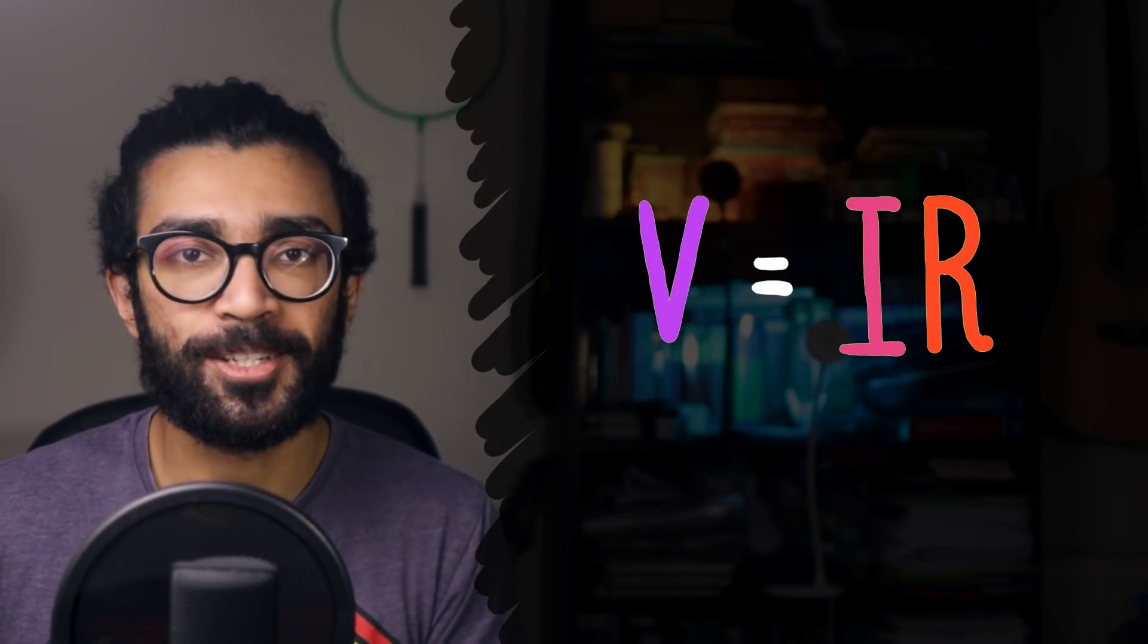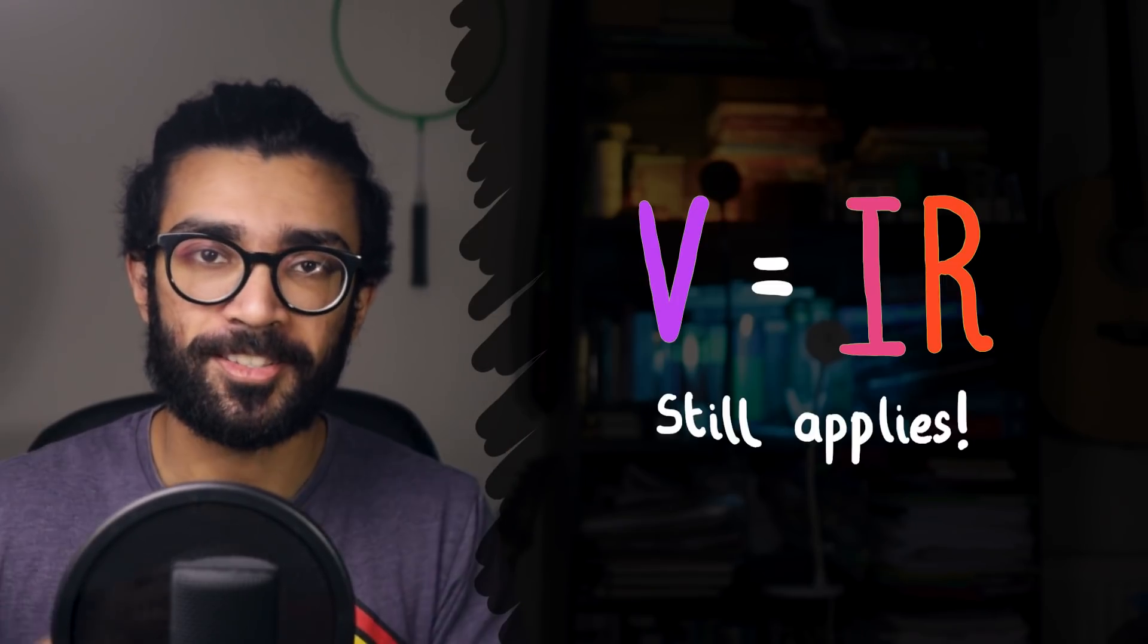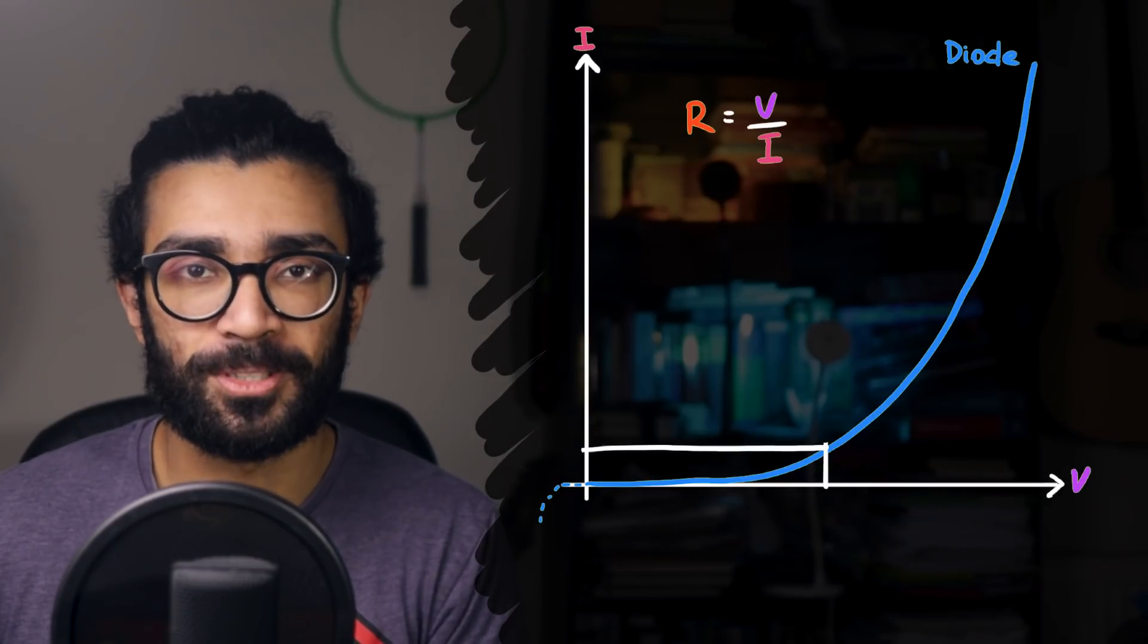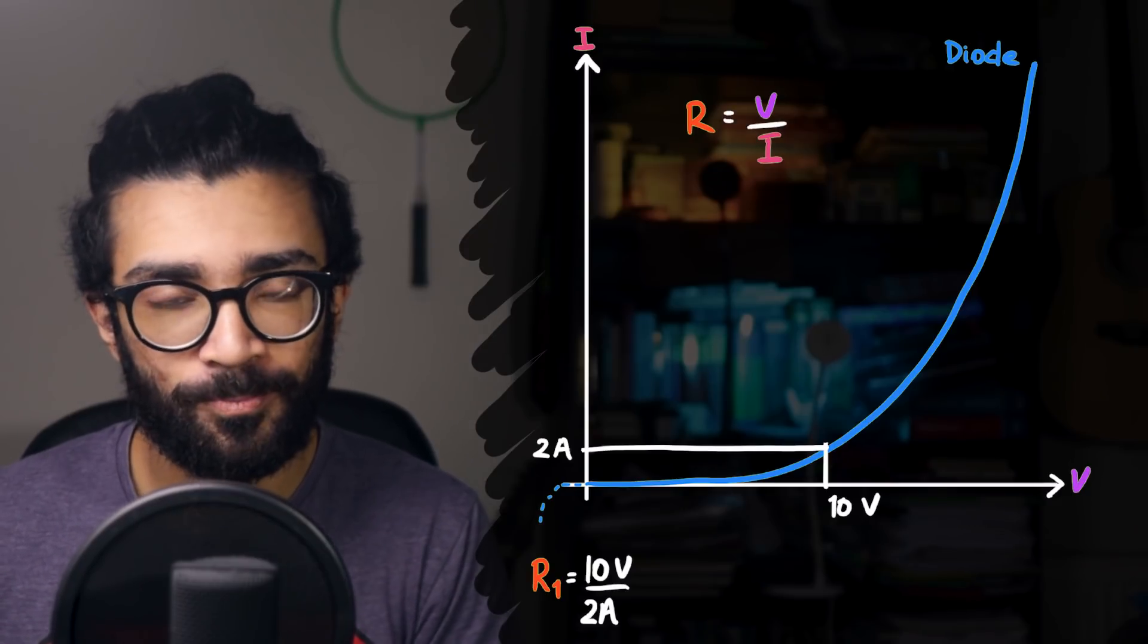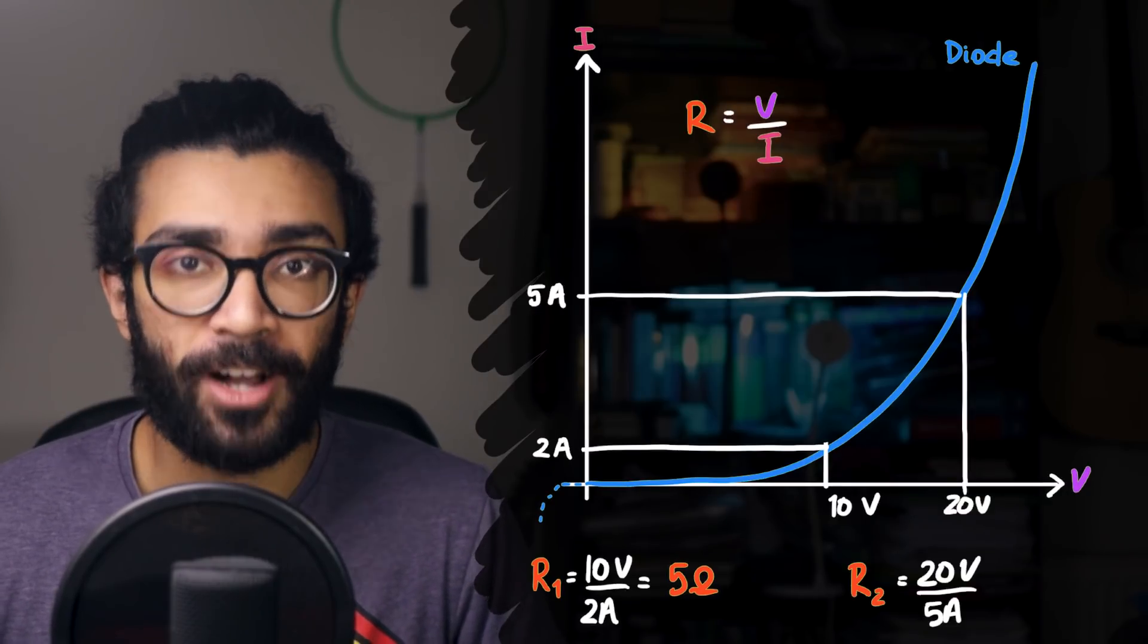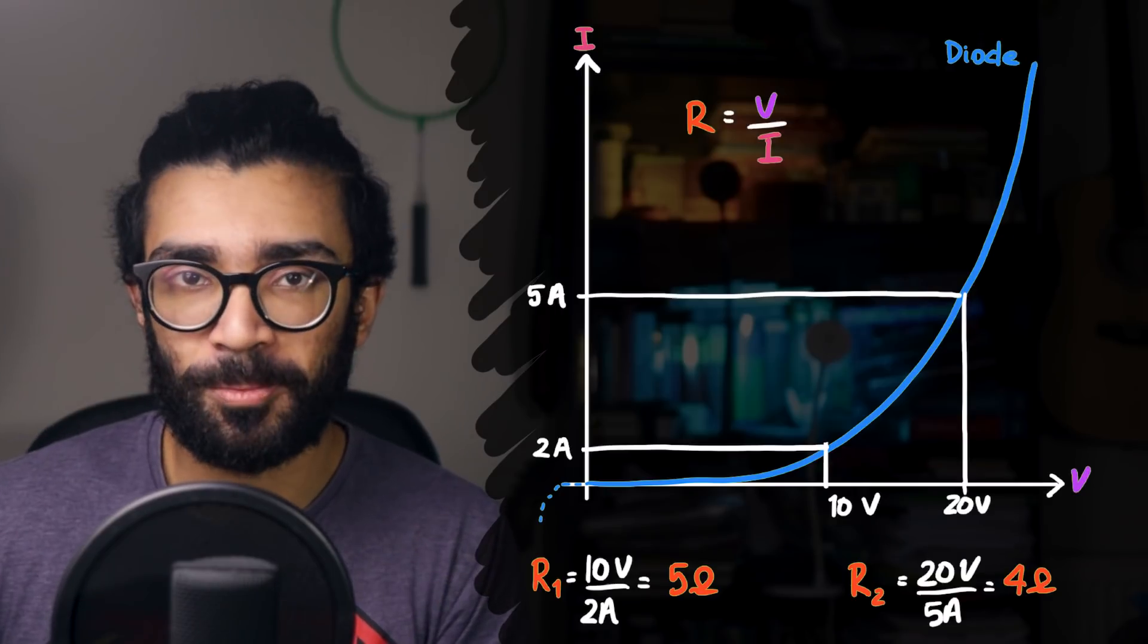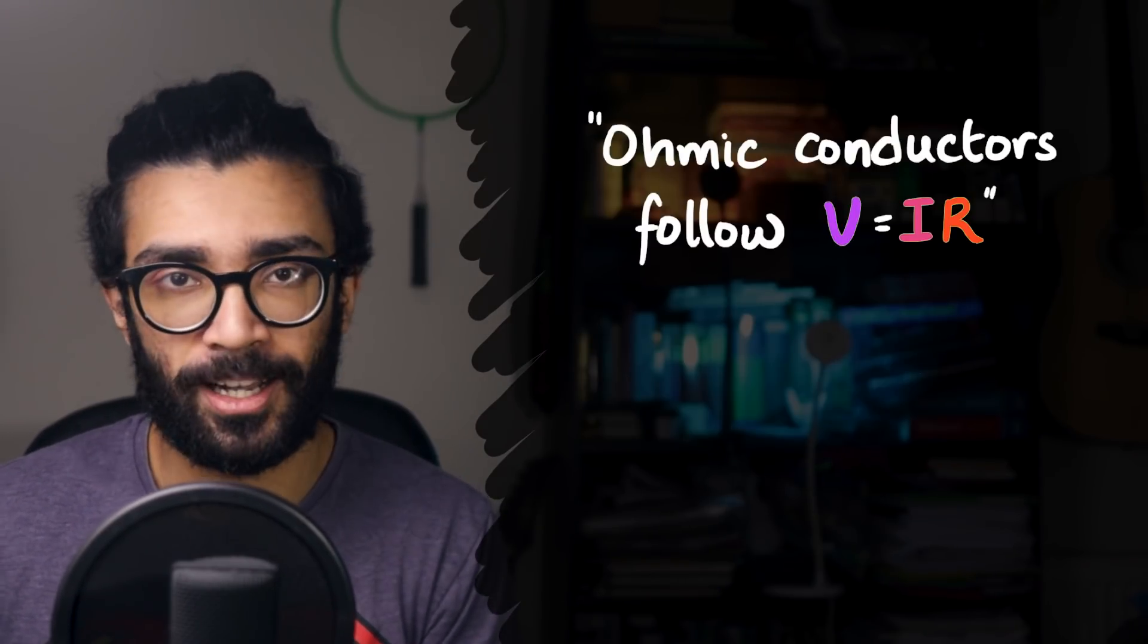However, the equation V equals IR still applies here. We could still find the resistance of the diode at any point along the graph. Say, for example, at a potential difference of 10 volts, the current through the diode is 2 amps, and hence the resistance is 5 ohms. But maybe at 20 volts, the current is 5 amps, and hence the resistance is 4 ohms.